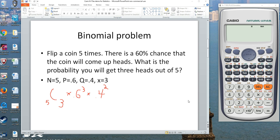Now here's a typical binomial problem. Flip a coin five times, there's a 60% chance the coin will come up heads. What is the probability you will get three heads out of the five coin flips? This is the problem.